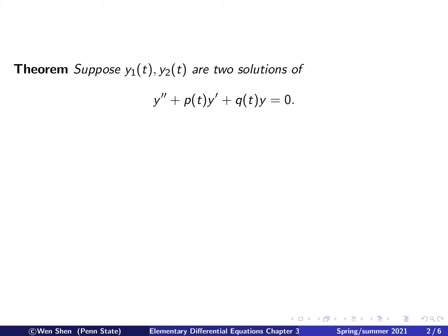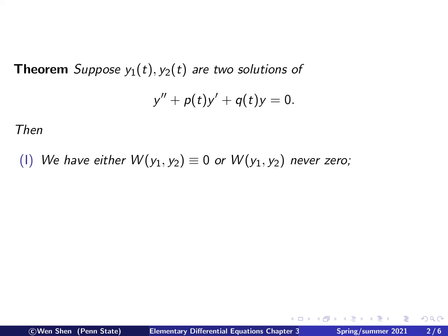So the theorem says: we are given a second-order linear equation with the homogeneous right-hand side, that is 0. And suppose now we have found two solutions, one is y1 and the other is y2. Then we have the following. Part 1: we have either the Wronskian of y1, y2 is identically 0, or is never 0.